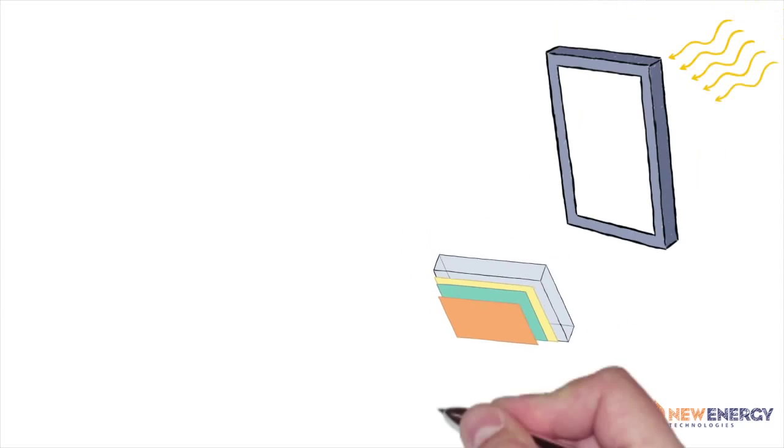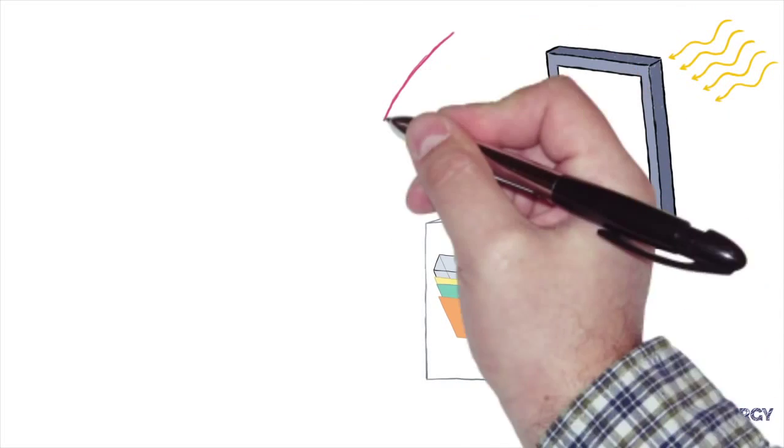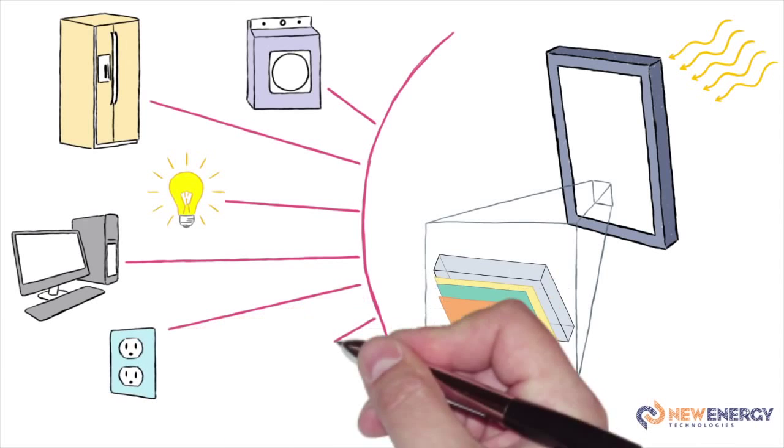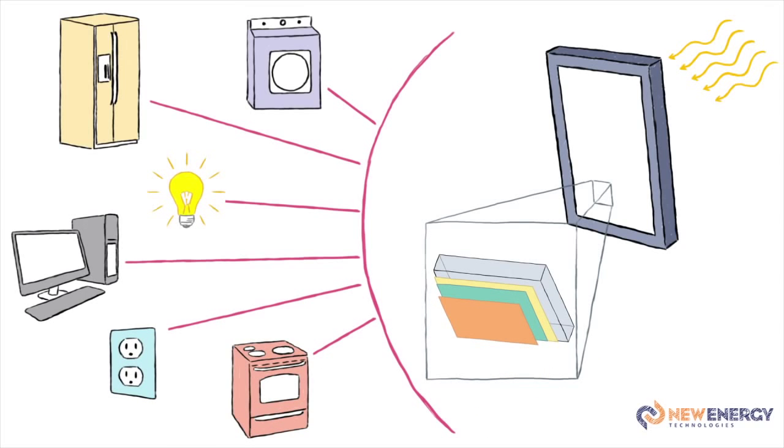That electricity then travels through a series of additional layers, through invisible wires, and eventually into lights, appliances, computer equipment, and other fixtures that power modern life.